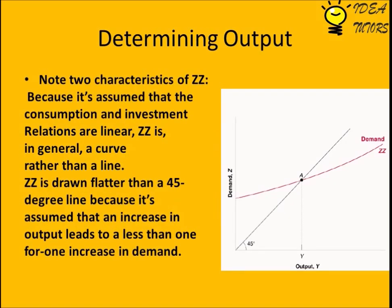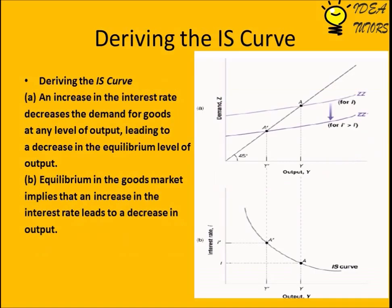ZZ is the aggregate demand curve and the 45-degree line is the AS curve. Two characteristics of ZZ: because it is assumed that the consumption and investment relations are linear, ZZ is in general a curve rather than a line. ZZ is drawn flatter than the 45-degree line because it is assumed that an increase in output leads to a less than one-for-one increase in demand.